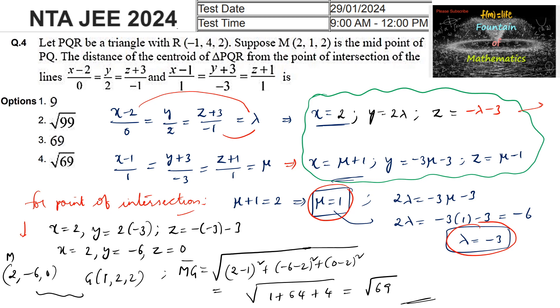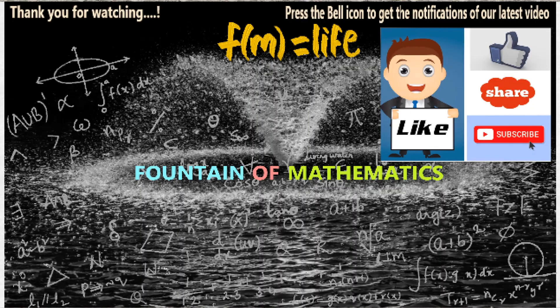So √69 is the answer, which corresponds to option D.